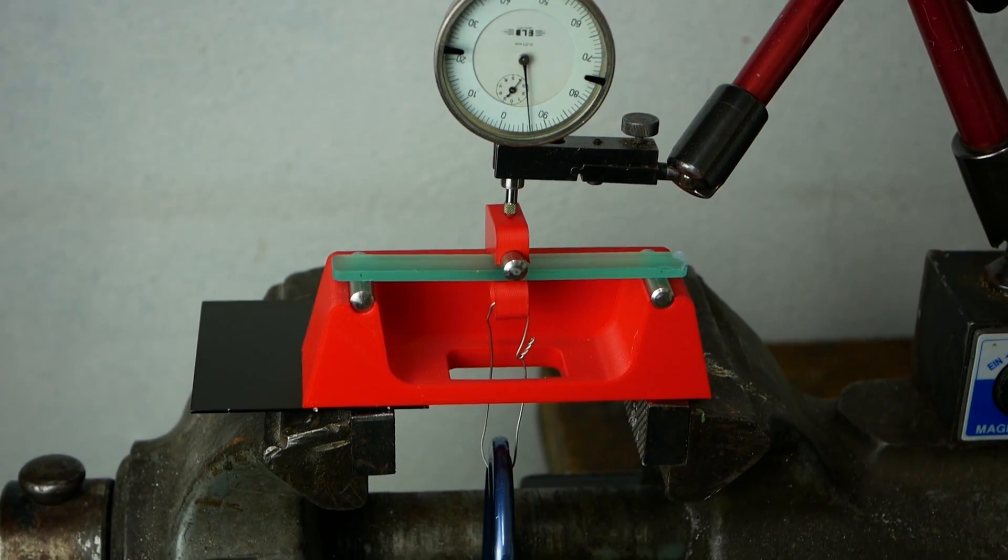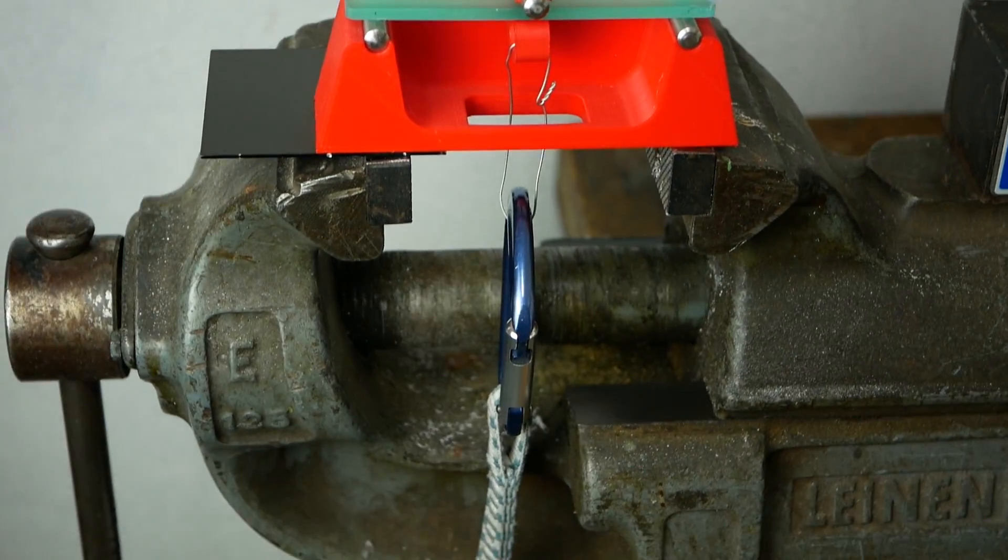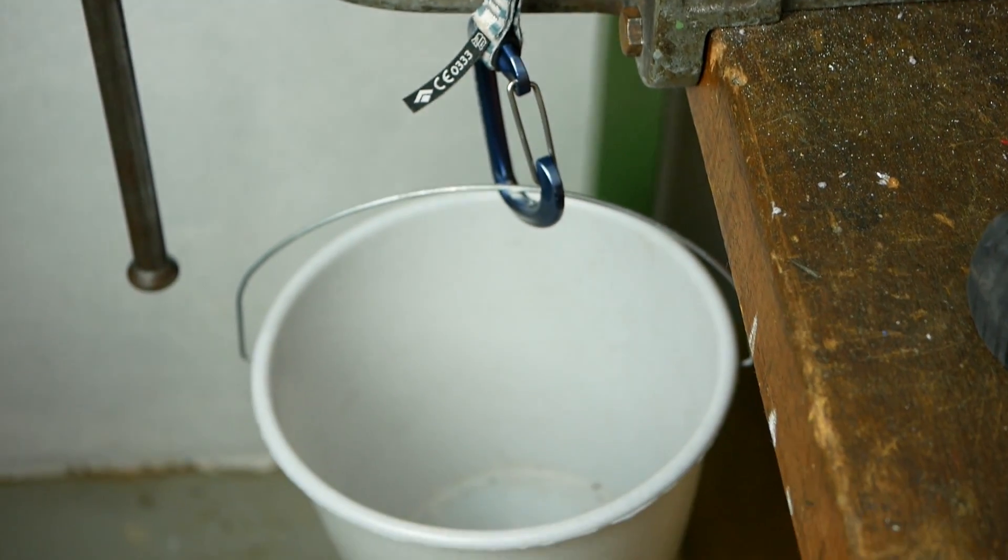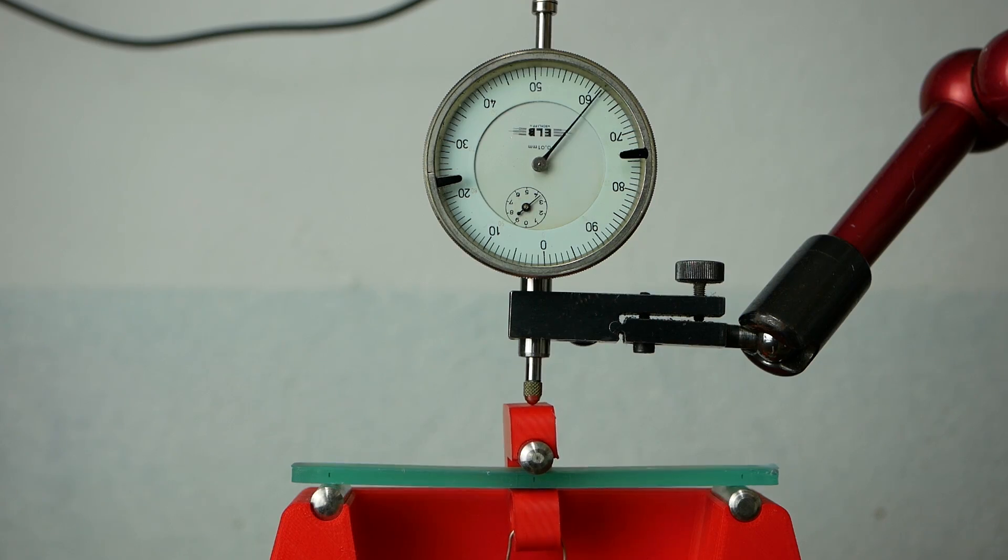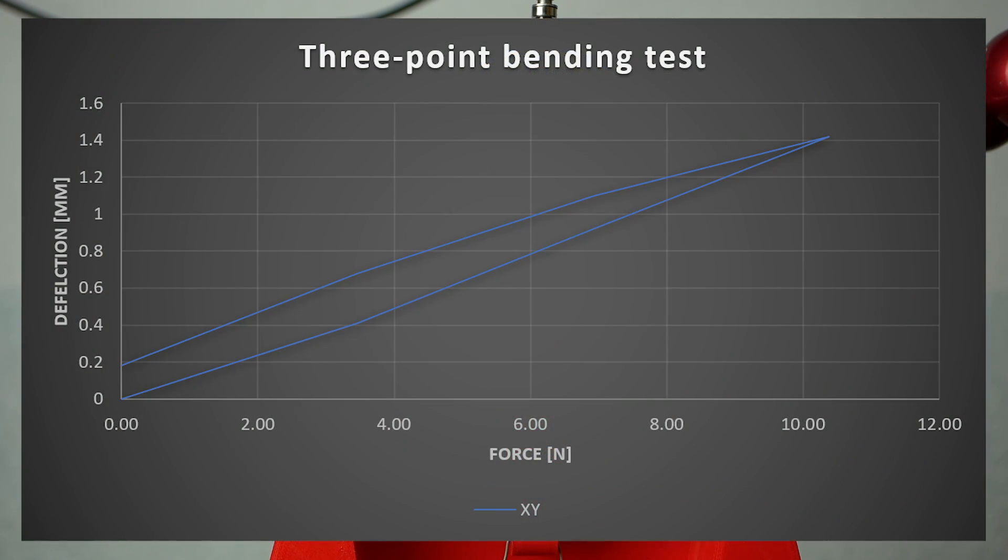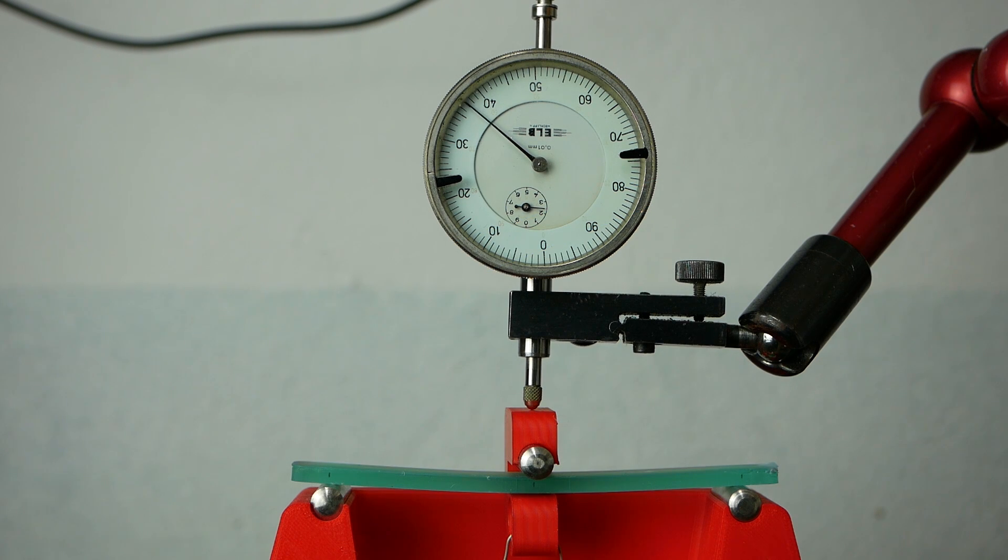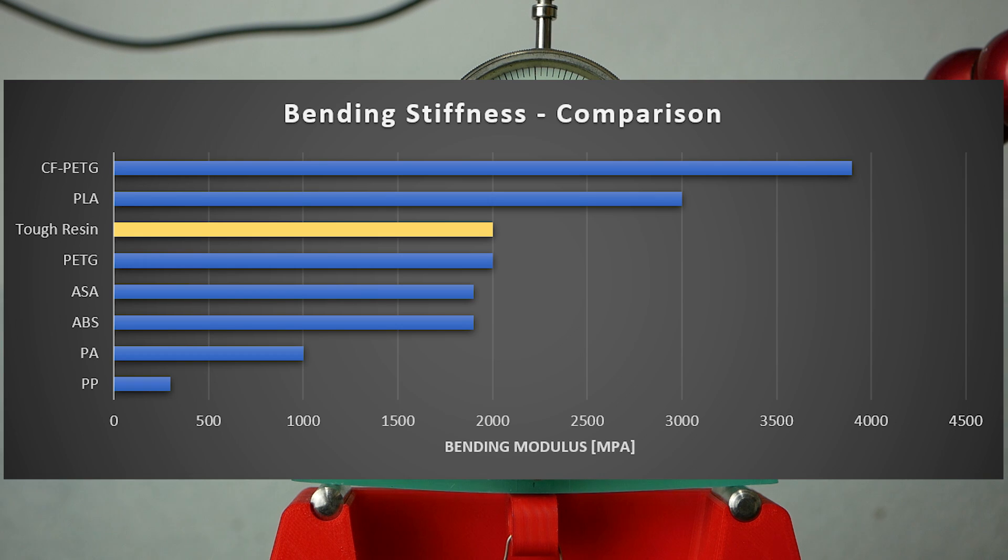Next I checked the bending modulus of the material on my 3-point bending test rig where I load a flat sample successively with higher loads and measure the corresponding deformation, from which I can calculate the stiffness or better the bending modulus. Here the material behaved a bit uncommon and after the loading procedure didn't stop at a specific value but slowly crept. This can also be seen in the histories of the load deformation plot. If anyone knows why this is happening let me know. Still, at the end the bending modulus turned out to be 2000 MPa, which is similarly stiff or compliant as PETG or ABS.